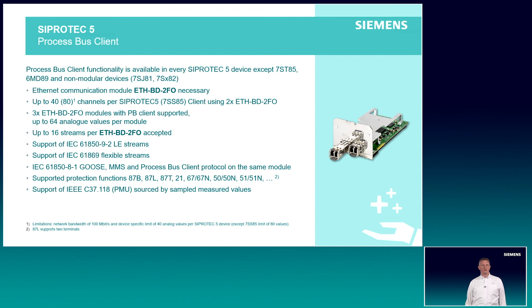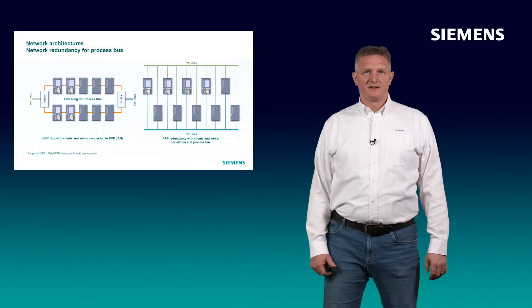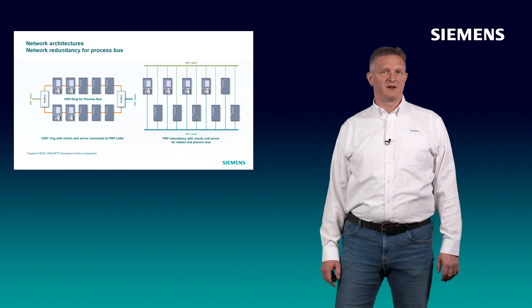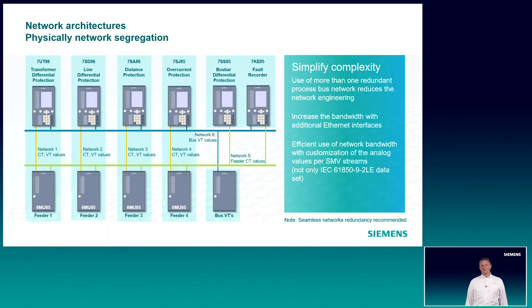How about the opposite end — the process bus subscriber, the protection devices? Up to three Ethernet modules can be used to subscribe to 16 streams per module, meaning in total you can have three times 16 streams. The protection device can be fully used to subscribe to sampled values as well as measured values. Network redundancy for process bus, which is a mission-critical task, requires seamless network redundancy like HSR and PRP — both are supported in SIPROTEC 5.